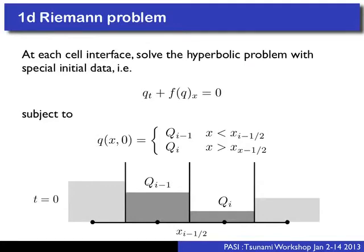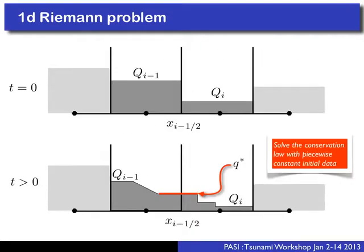We start with our conservation law and ask: what happens if I start with piecewise constant data on the left and right as initial data and attempt to solve this equation? You might think that's what I'm trying to do discretely — why would I make my life complicated by solving this analytically before solving it discretely? Well, that's exactly what we do, and the reason it works is that with this very special data, we can actually solve this analytically.